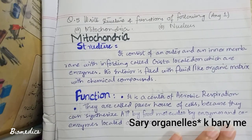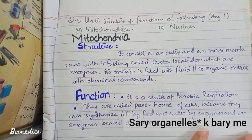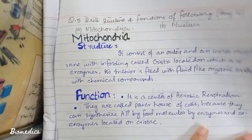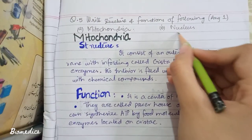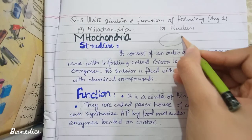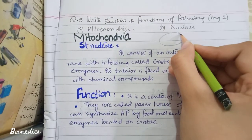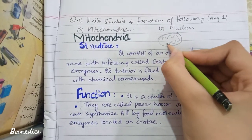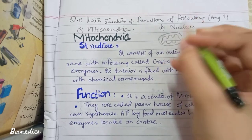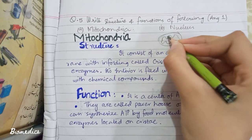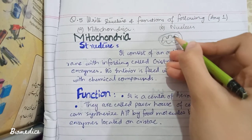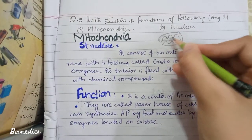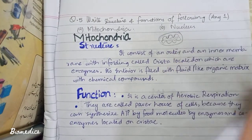You should know everything about the structure and function of mitochondria. The shape of mitochondria is variable. It has an outer membrane and an inner membrane. The inner membrane has infoldings called cristae, and the interior is called the matrix.